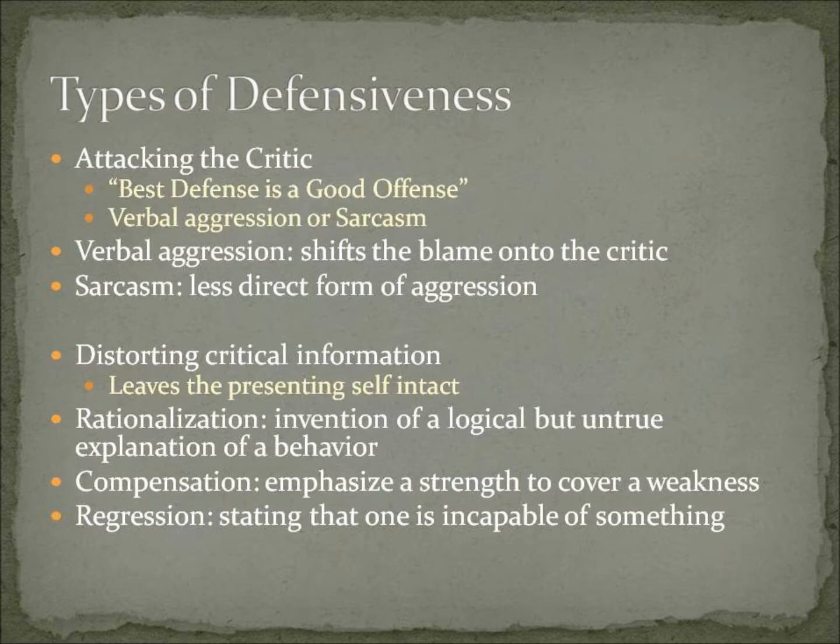Distorting critical information leaves the presenting self intact, done through rationalization, compensation, or regression. Rationalization is the invention of a logical but untrue explanation of a behavior to avoid an unpleasant situation. Compensation involves emphasizing a strength in one area to cover up a weakness in another, and is only harmful when it is not used sincerely. Regression is stating that one is incapable of something to avoid a situation.